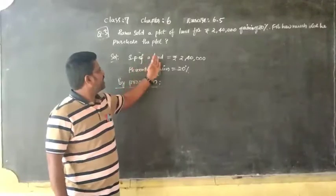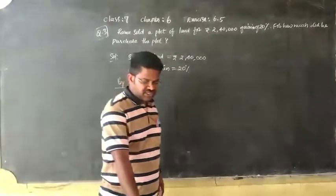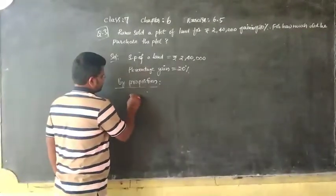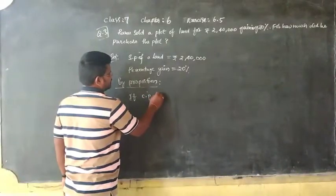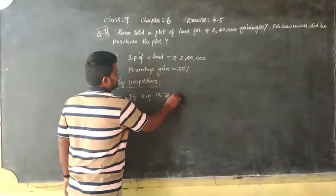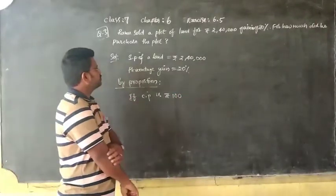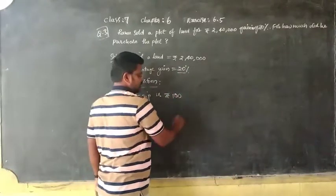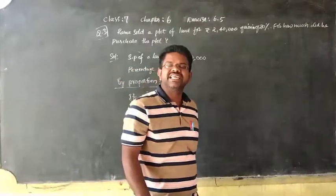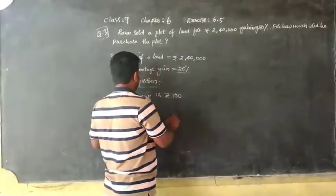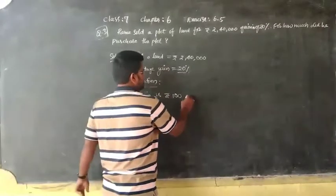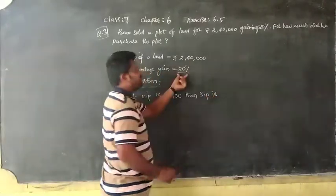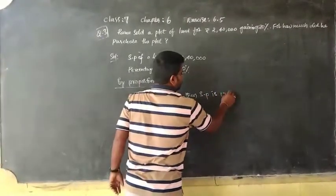From the given information, if the cost price is hundred rupees, and twenty percent gain, then what is the selling price? If cost price is hundred rupees, then selling price is, as per the given percent of gain, one hundred and twenty rupees.